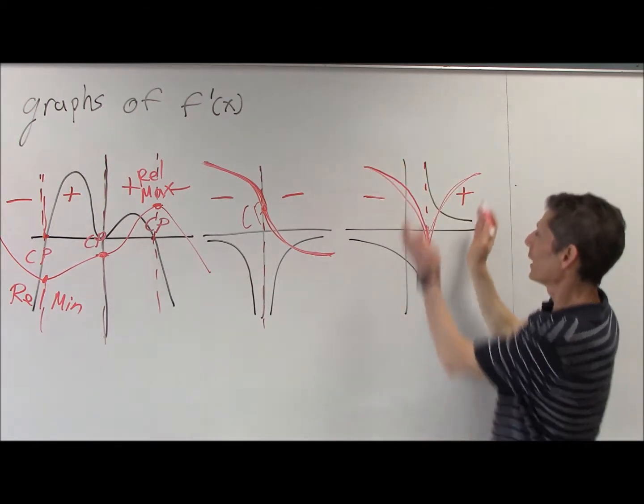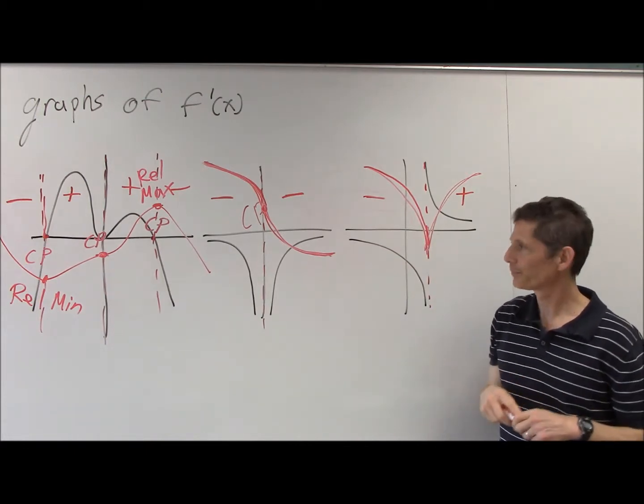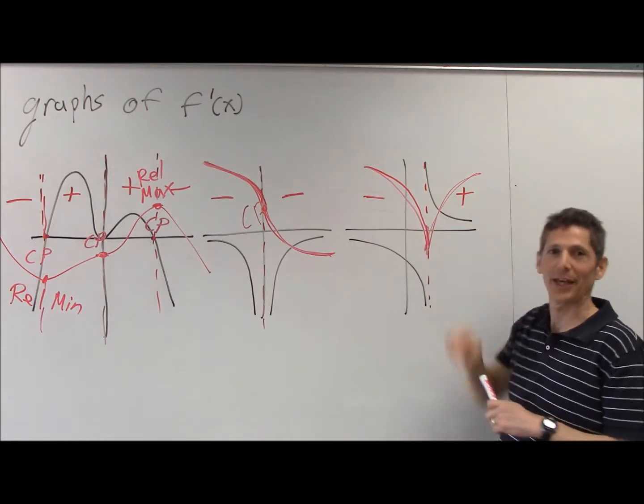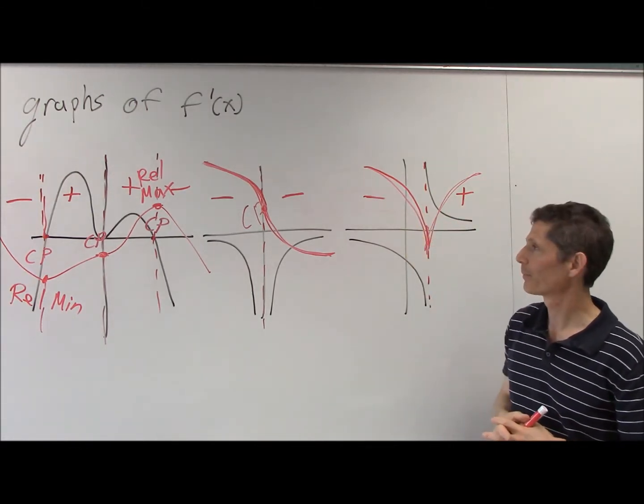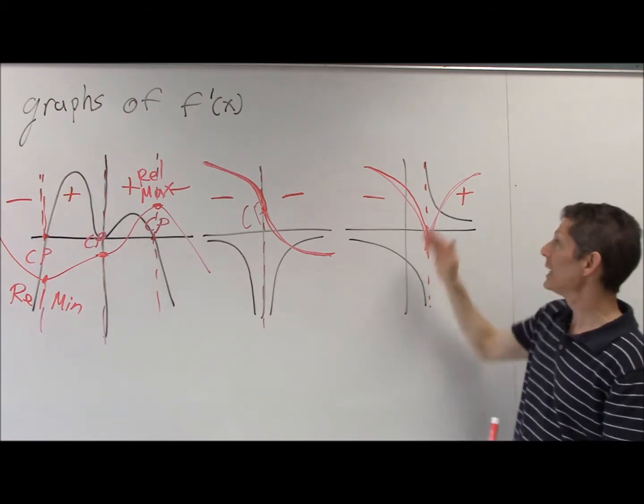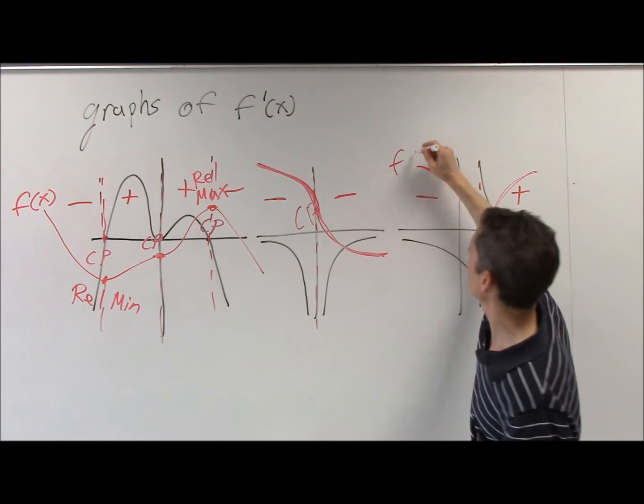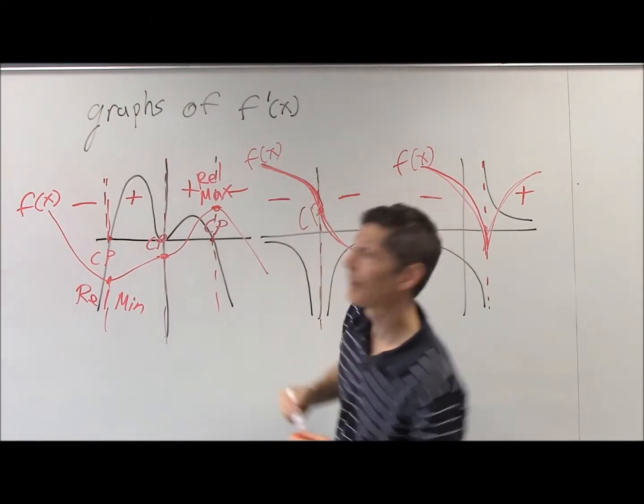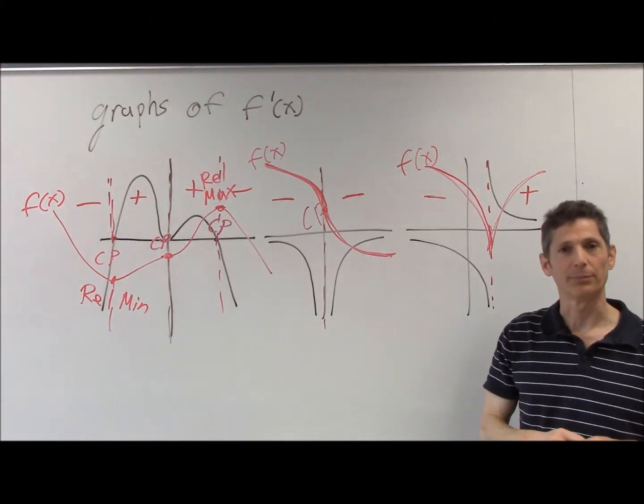And we don't know where that sharp corner happens in terms of the y value. Again, it could be up or down, but we know exactly where it is in terms of its x value. I intentionally didn't bounce it right off the x axis. It could go below or above. Well done. Just to be clear, these red lines here are not the derivative. They are the original function, which we are sketching from the derivative.